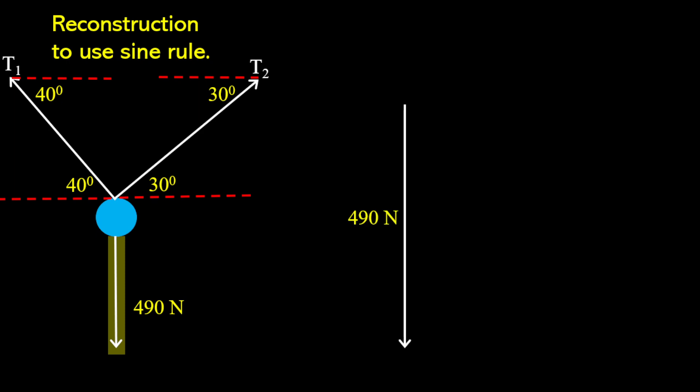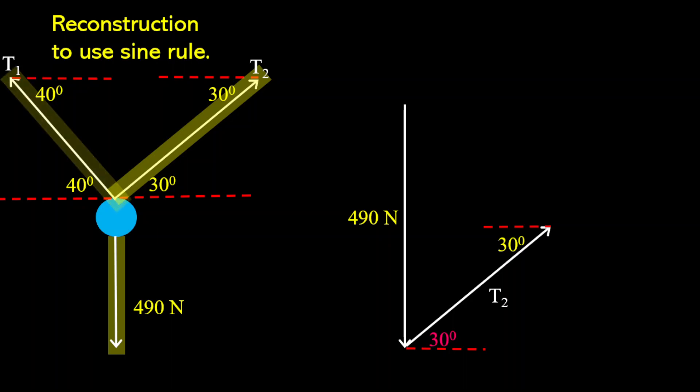Now relative to that force, we have our T2, and notice the direction of T2 at that angle of 30 degrees as well. Relative to that force, we have our T1, and notice the direction of T1. We also apply that to our diagram, and now we have a complete triangle.